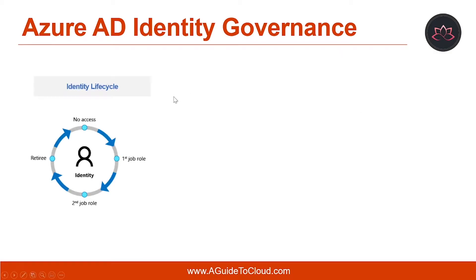Let's talk about Identity Lifecycle first. Identity Governance helps organizations achieve a balance between productivity and security — how quickly can a person have access to the resources they need, and how should their access change over time? Identity Lifecycle Management is the foundation for identity governance, and effective governance at scale requires modernizing the Identity Lifecycle Management infrastructure for applications.